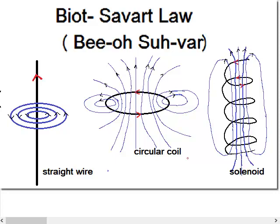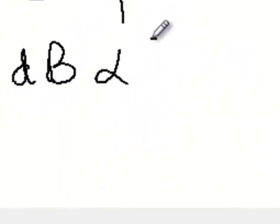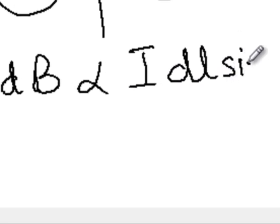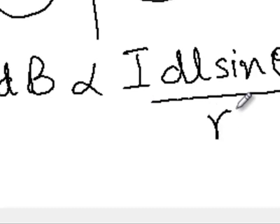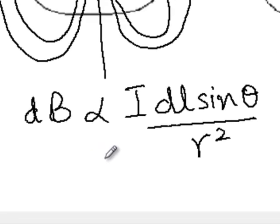Now what does the Biot-Savart law state? The Biot-Savart law states that the magnetic field dB is proportional to I dl sin theta over r squared. Now this sounds fairly complicated but actually isn't so complicated. So let's take a look at what each of these terms mean.